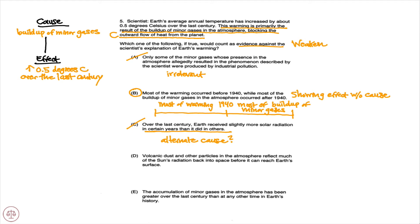If C had said that over the last century, Earth received slightly more solar radiation than it did in the previous century, that would be an alternate cause and it would have been the correct answer. Checking D: volcanic dust and other particles in the atmosphere reflect much of the sun's radiation back into space before it can reach Earth's surface. That does nothing to our argument here, so D would be out.